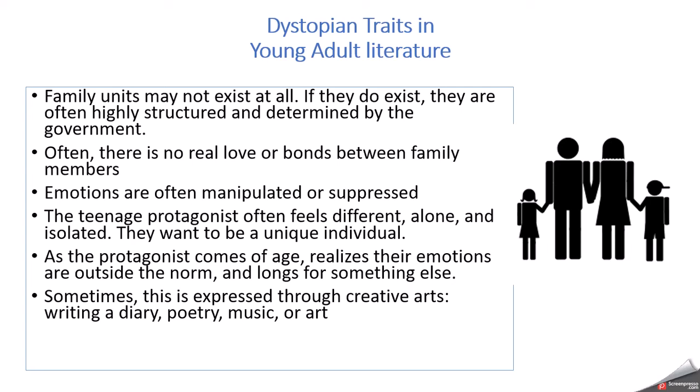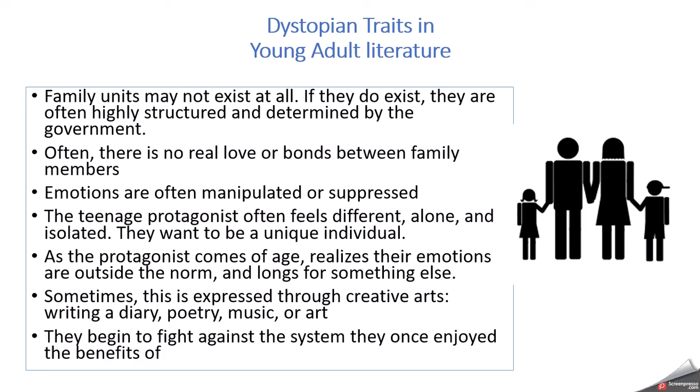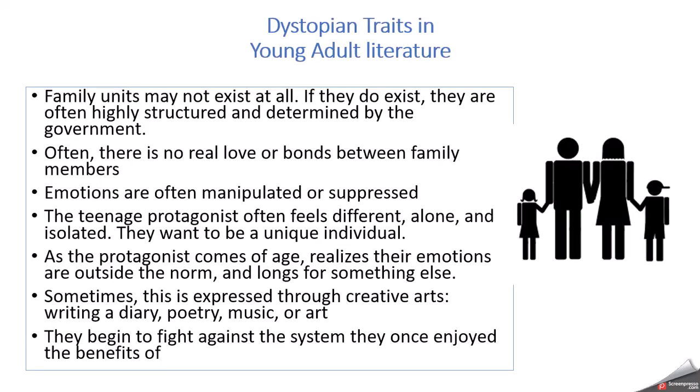Sometimes protagonists express this through creative arts — writing a diary, poetry as in the book Matched, or music. In Gathering Blue, Kira is able to do embroidery and sewing. They begin to fight against the system that they once enjoyed the benefits of. One of the key things to dystopian literature is a love triangle — it's a trope that kind of annoys me, but I understand why it's done and how it's useful, reflecting what kids are going through.